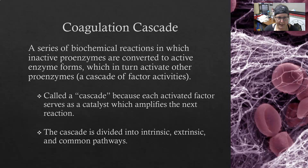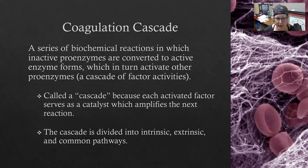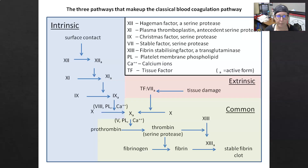The coagulation cascade is a series of biochemical reactions in which an inactive proenzyme or inactive protein is converted to an active enzyme or active protein, which in turn activates another proenzyme. There is a cascade of factor activities — think of it as dominoes falling and hitting each other. One activates the next, which activates the next. It is called a cascade because each activated factor serves as a catalyst that activates or amplifies the next reaction.